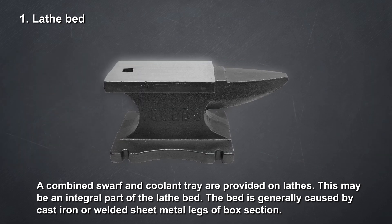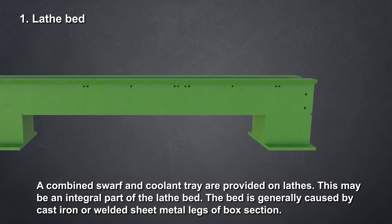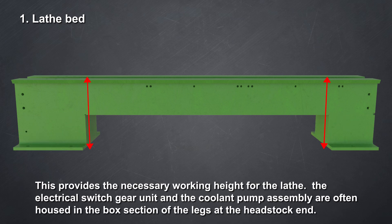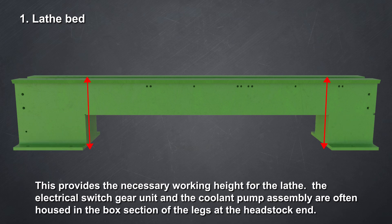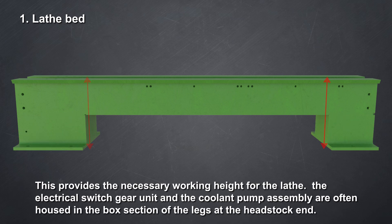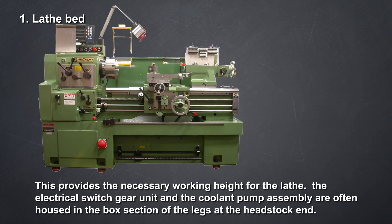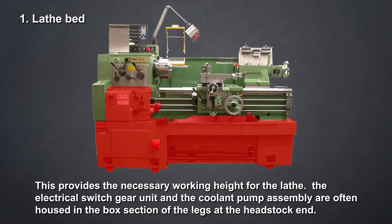The bed is generally made of cast iron or welded sheet metal legs of the box section. The electrical switchgear unit and the coolant pump assembly are often housed in the box section of the legs at the headstock end.